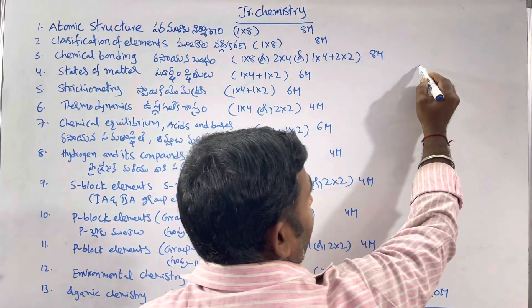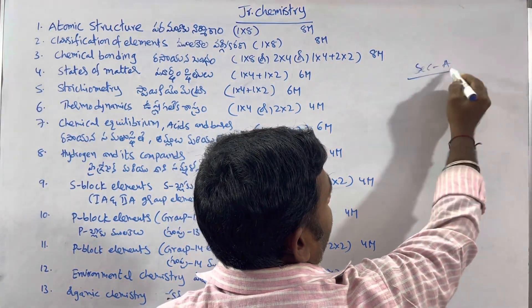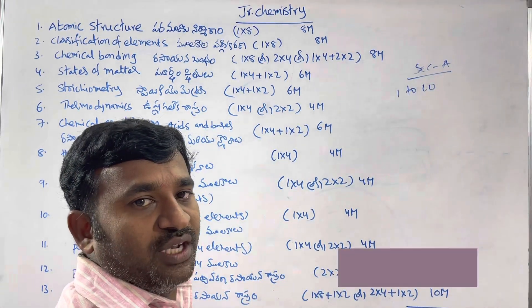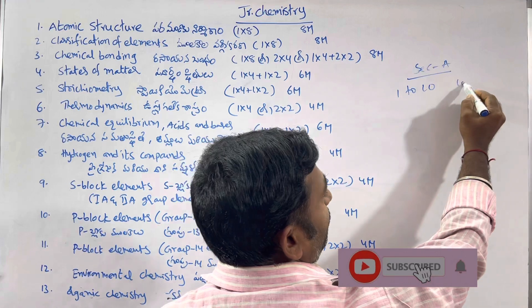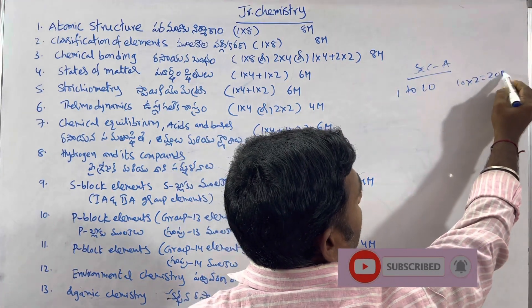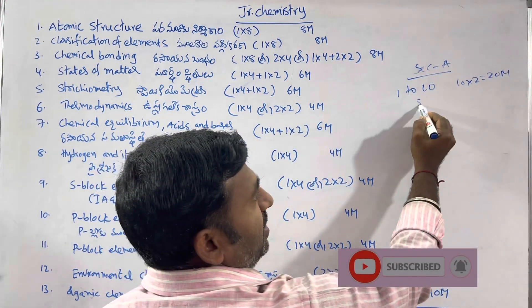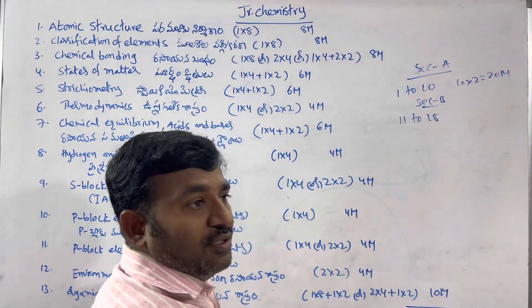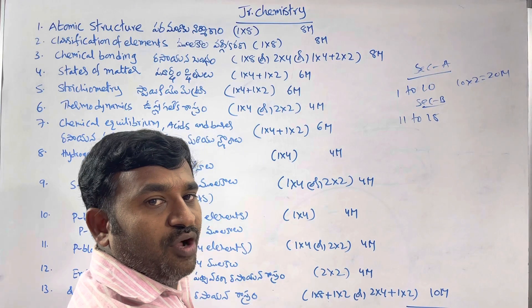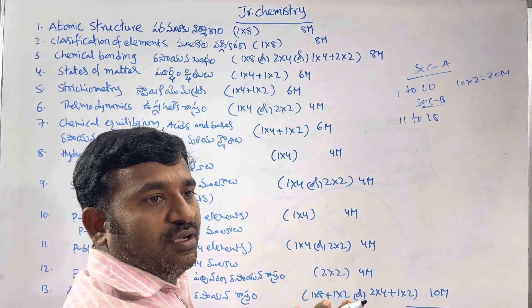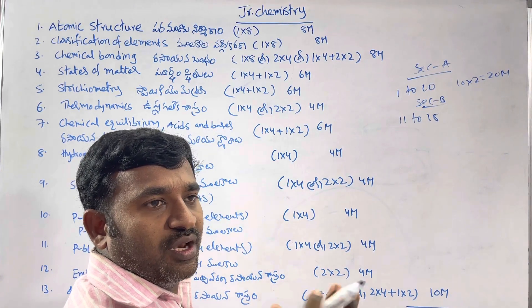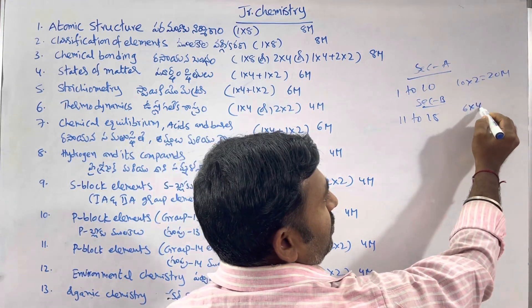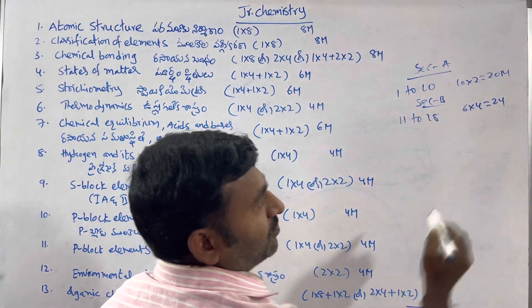Section A: Total 60 marks. Section A, questions 1 to 10, each 2 marks. So 10 into 2 = 20 marks. Section B: questions 11 to 18 — out of 8 questions, you have to write only 6. Each question 4 marks. So 6 × 4 = 24 marks.